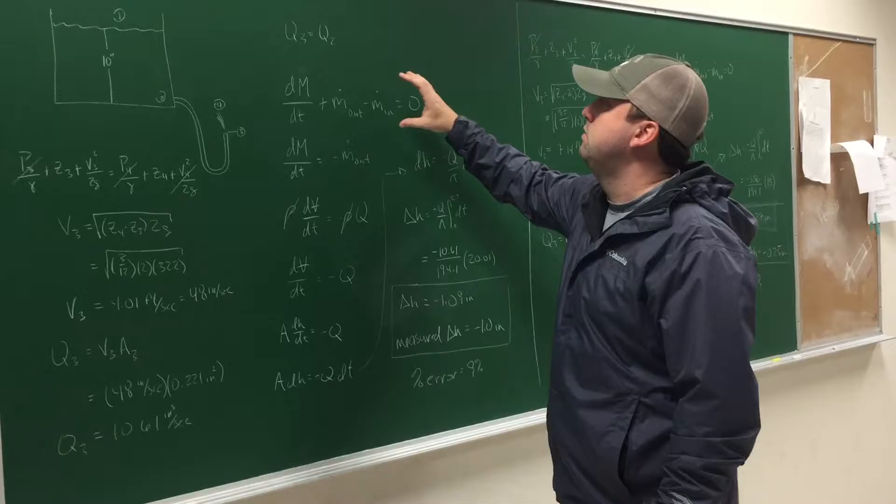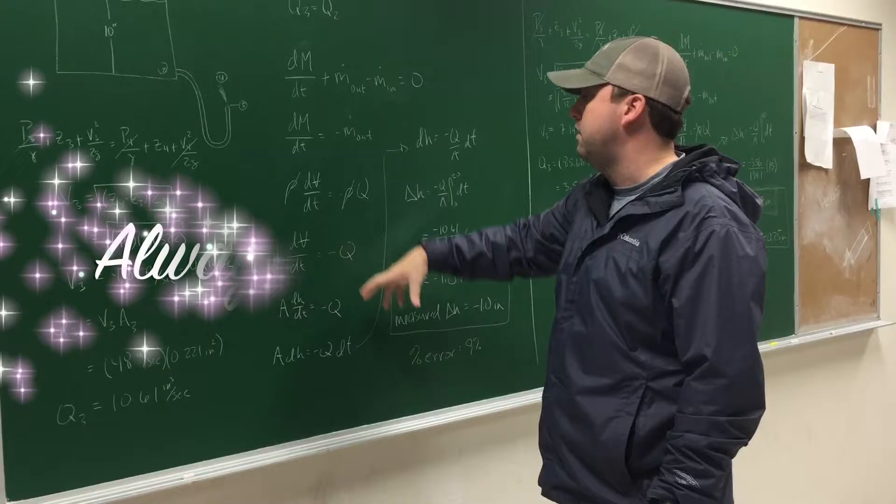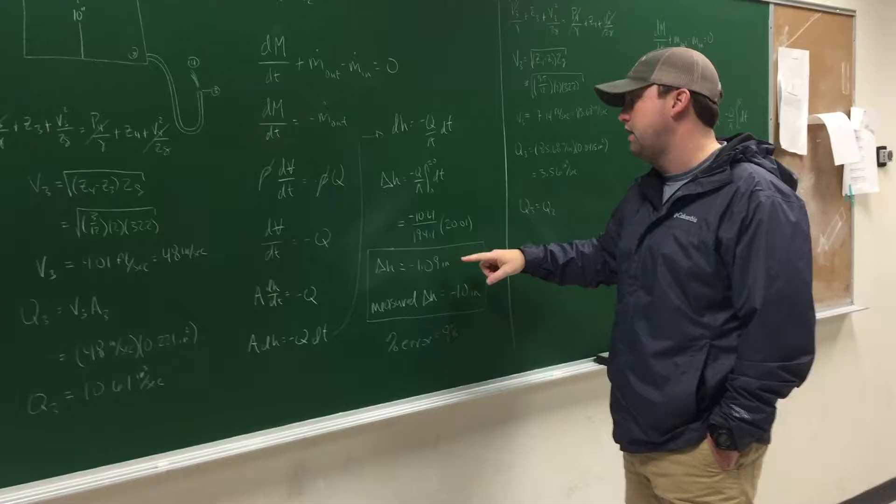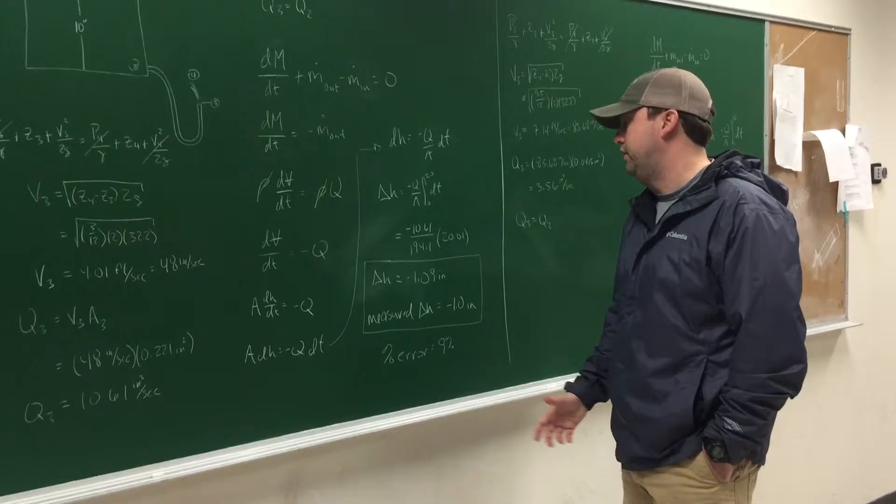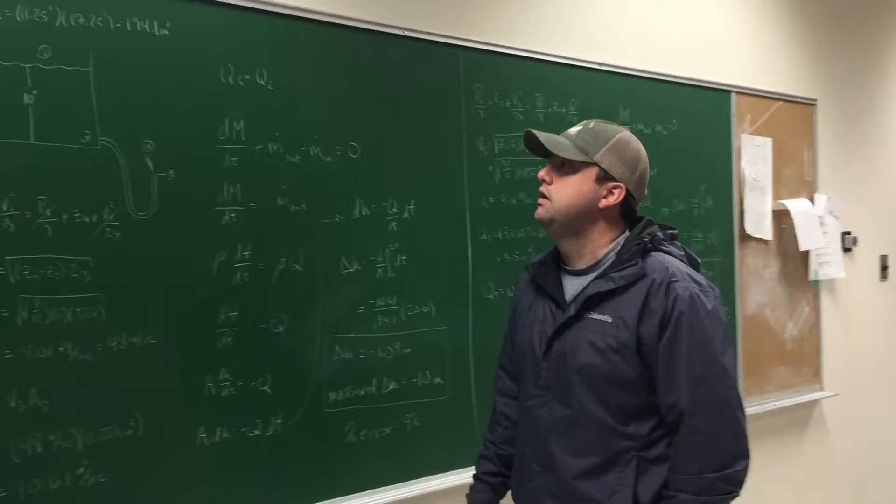So, using that, we used a momentum equation. Once you do your canceling and your algebra and then some integration, we found that the calculated change in height was 1.09 inches below where we started. Which was less than a tenth of an inch. It's about a 9% error, which we feel is pretty accurate.